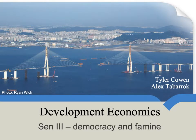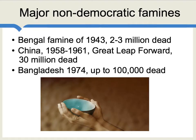Our third look at Amartya Sen covers his theory on democracy and famine. In world history, the major famines have come generally under non-democratic regimes. The Bengal famine of 1943 left 2 to 3 million people dead, and during this time India was ruled by Great Britain. Perhaps the largest and most tragic famine ever was the Great Leap Forward in China, and this came under the communist dictatorship of Chairman Mao. The famous Bangladesh famine of 1974 also came under a non-democratic regime. There are many more such examples.